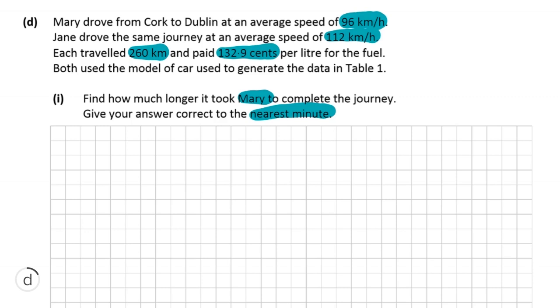So how much they paid for the fuel at this point at least is irrelevant. I'm sure it's going to come up in part two, but all we've got to do is divide the distance of the journey. So 260 by their respective speeds and then find the difference. So 260 divided by 96 is the amount of time it took Mary to drive the journey. And 260 over 112 is the time it took for Jane to drive the same journey. Obviously, she was going faster, so it's going to be smaller. And you're going to find that the difference is about 0.3869 hours.